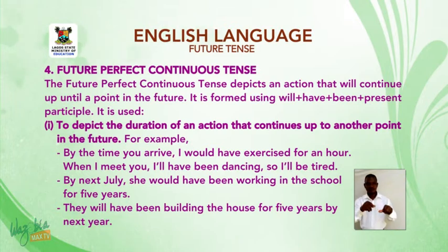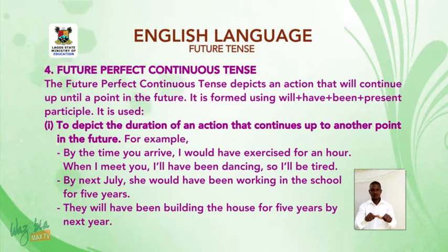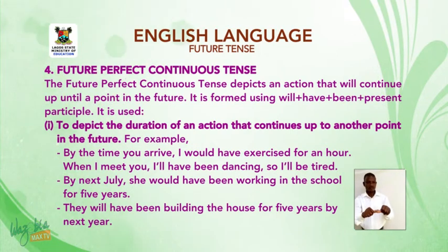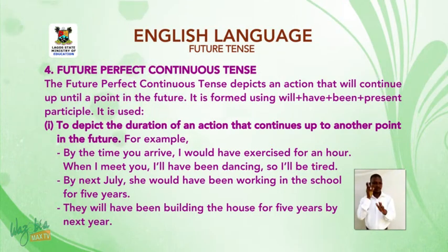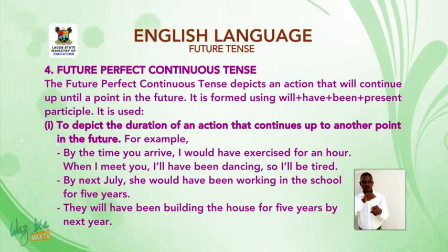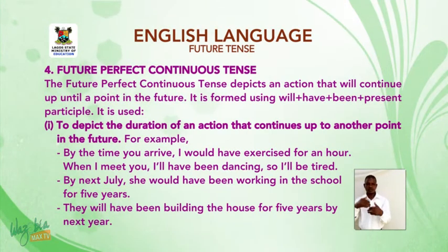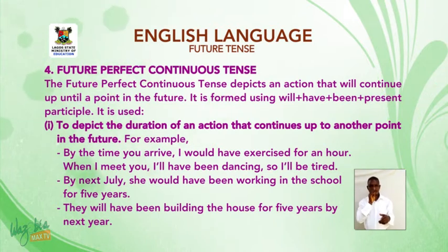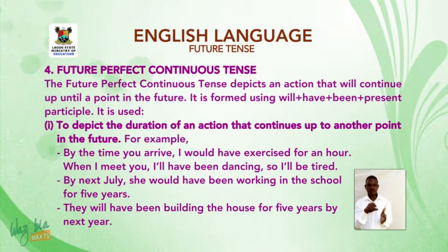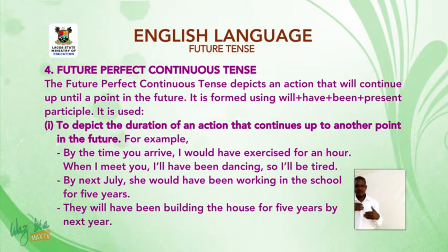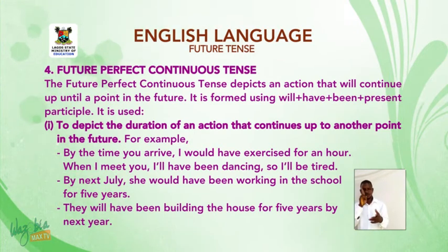The last type is future perfect continuous tense. This tense depicts an action that will continue up until a point in the future. It is formed using WILL + HAVE + BEEN (B-E-E-N) + present participle verb.